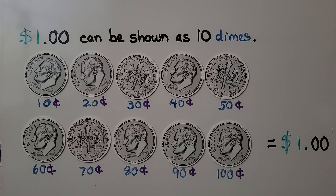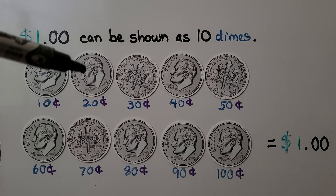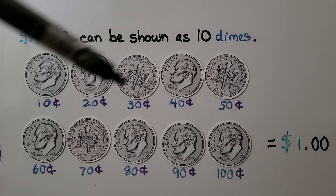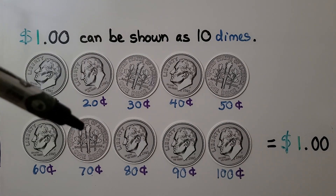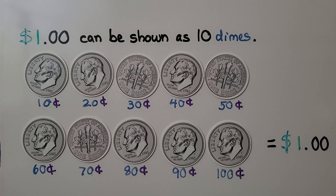So 10 dimes are equal to $1. One dollar can be shown as 10 dimes — they're each 10, so we can count: 10, 20, 30, 40, 50, 60, 70, 80, 90, 100 cents. And 100 cents is equal to $1, so 10 dimes are equal to $1.